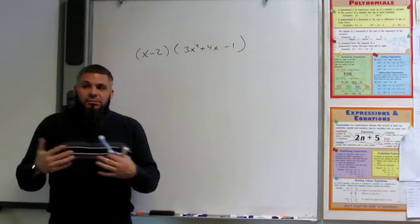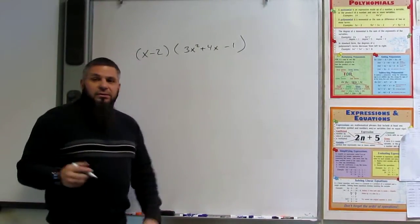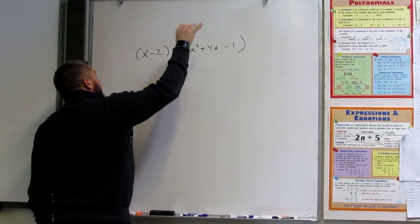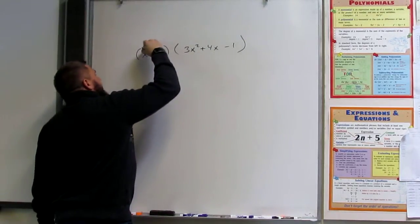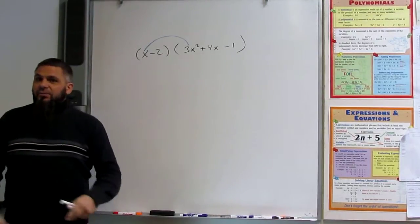So clamshell. This is a typical clamshell method. Everybody on the board gives a paper. Distribution. However you want to do it. But x times 3x². What do you get?